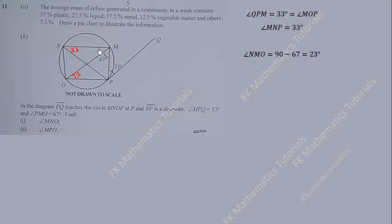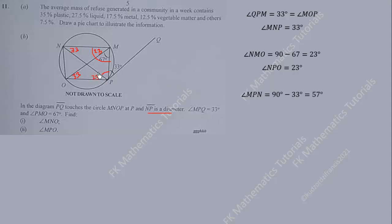Angle NMO equals 90 minus 67, which is 23 degrees, because NP is a diameter so the angle at the circumference is 90 degrees. Since this 23-degree angle is in the same segment, the corresponding angle is also 23 degrees — both created by arc NO. Since NP is a diameter, that right angle means the remaining angle is 90 minus 33, which gives 57 degrees.